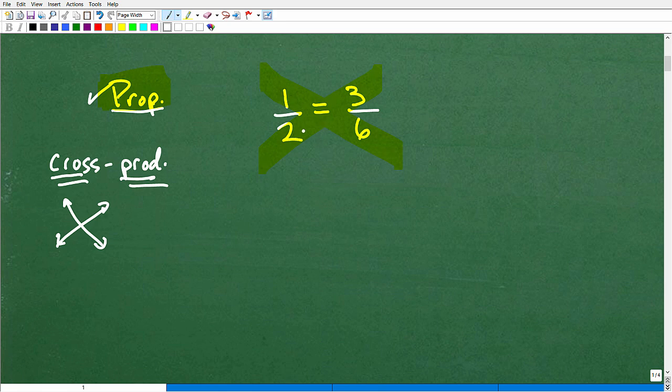So, for example, here, 2 times 3, I'll write that right here, will be equal to 1 times 6, all right? So let's just kind of quickly do this. So 2 times 3, that is 6, and 1 times 6 is 6. That is true.